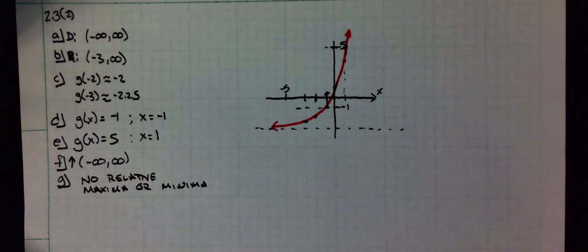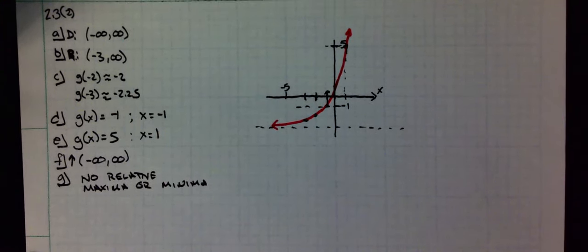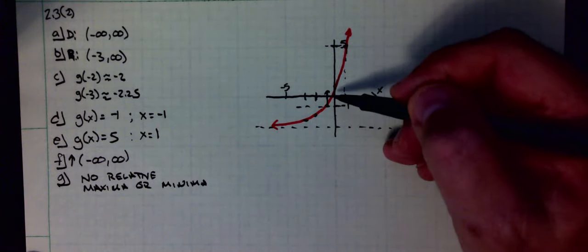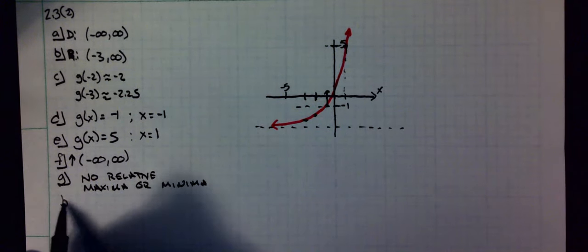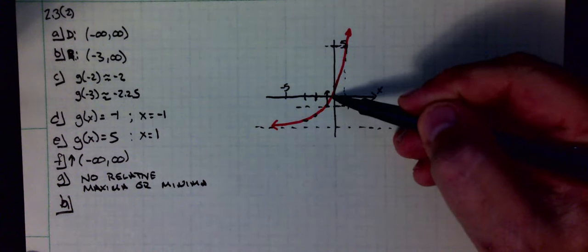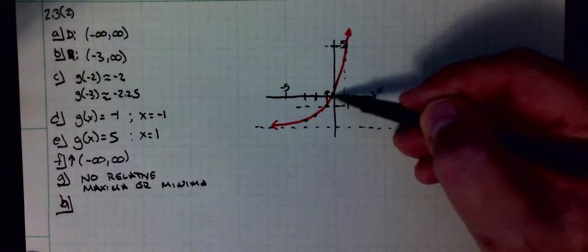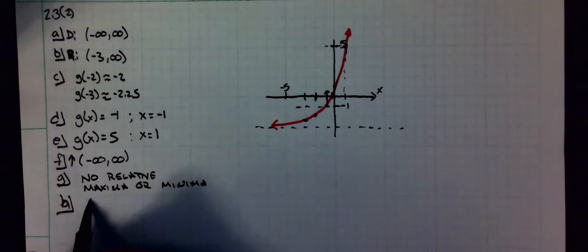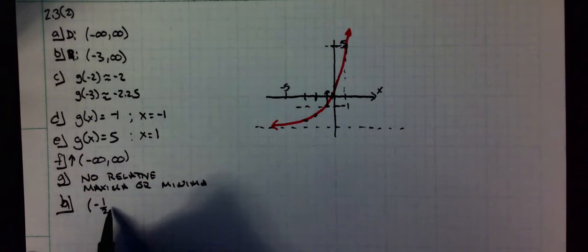Part H: state the intervals on which the function is positive. Intervals that I'm going to be giving are my x intervals when my y's are greater than 0. So it looks to be at about negative 1.5 is where it turns positive, so negative 1.5 to infinity.